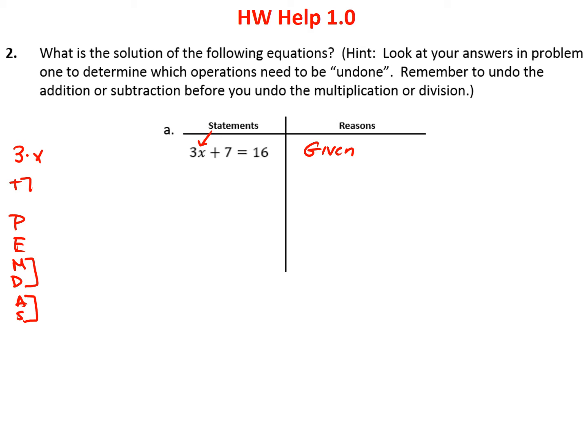Get in the habit of always undoing the addition or subtraction first before the multiplication. So we're going to undo plus 7 — the opposite of adding 7 is subtracting 7. Here we get to a fundamental aspect of solving equations. Because the two sides are equal, whatever you do to one side, you have to do to the other side. If you always subtract the same number from both sides, your equation stays equal. This is called the subtraction property of equality.